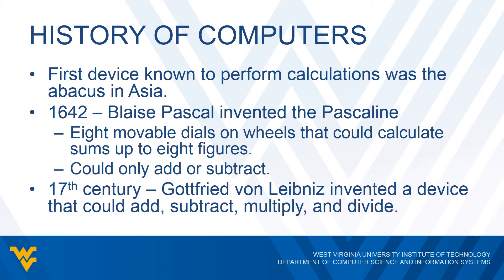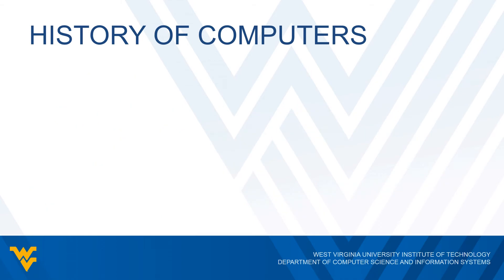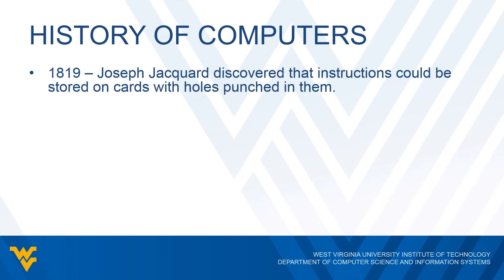The next advancement was in the 17th century. We don't know the exact year, but around that time Gottfried von Leibniz invented a device that could do more than just add and subtract — it could add, subtract, multiply, and divide. Then in 1819 Joseph Jacquard discovered that instructions could be placed on cards and holes punched in them. This became the punch cards popular in the 1950s, 60s, and 70s.